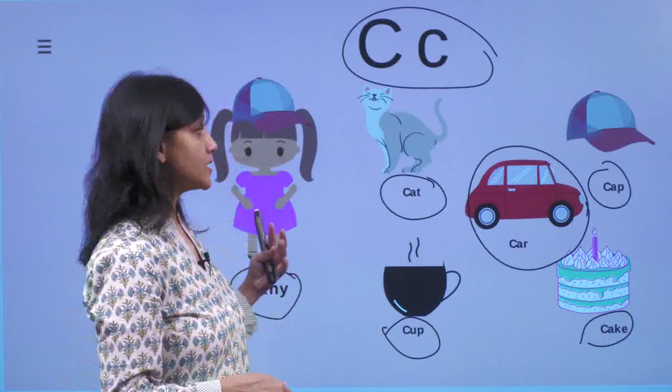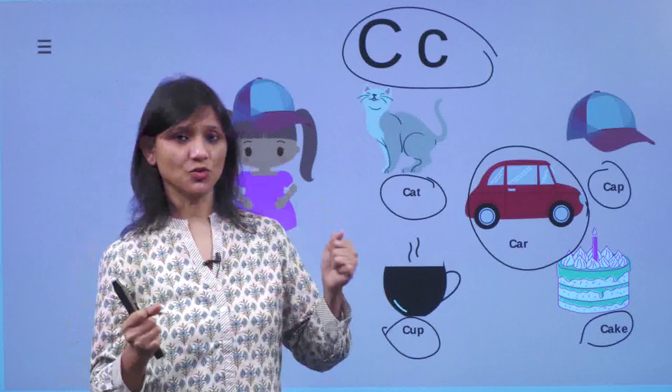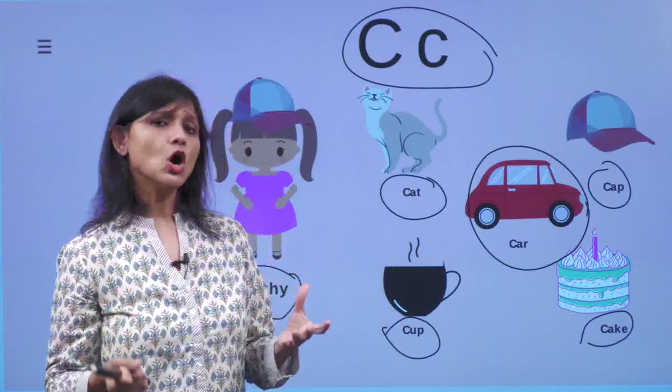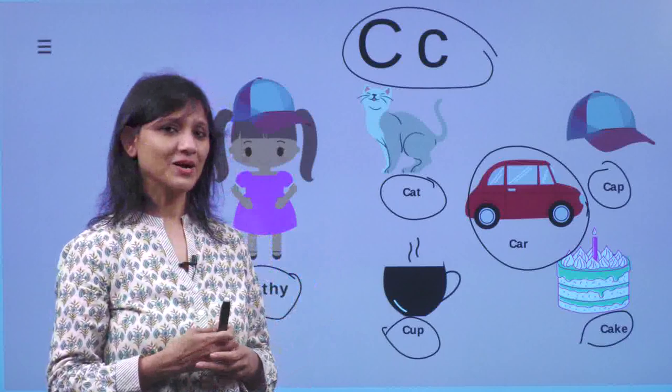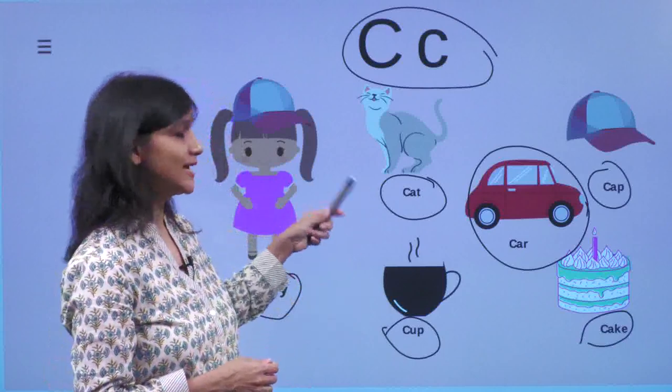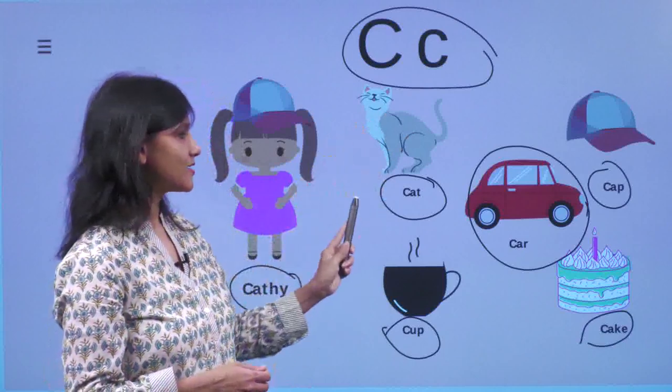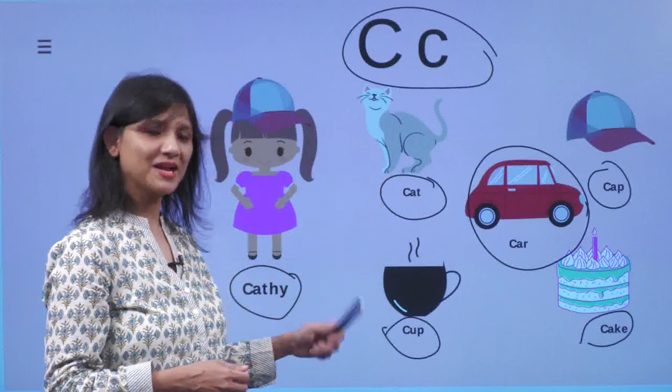So now you are going to tell the friend C story to your friends or your parents. It's cat, cap, car, cake and cup.